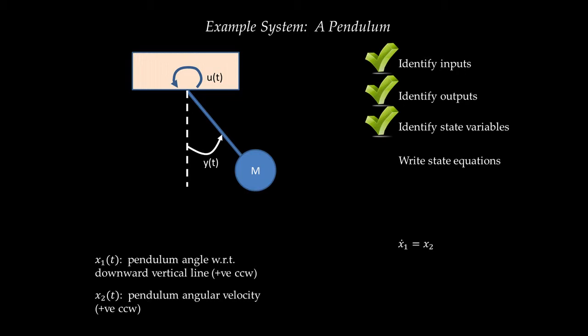This law of motion applies only in two specific cases. First, the summation of moments on a rigid body around its center of gravity equals the moment of inertia around the center of gravity multiplied by angular acceleration. Second, the summation of moments on a rigid body around a fixed point in space where the rigid body is hinged equals the moment of inertia around that point multiplied by angular acceleration. In this case, the pendulum is hinged at a fixed point in space, so we can apply this law of motion.